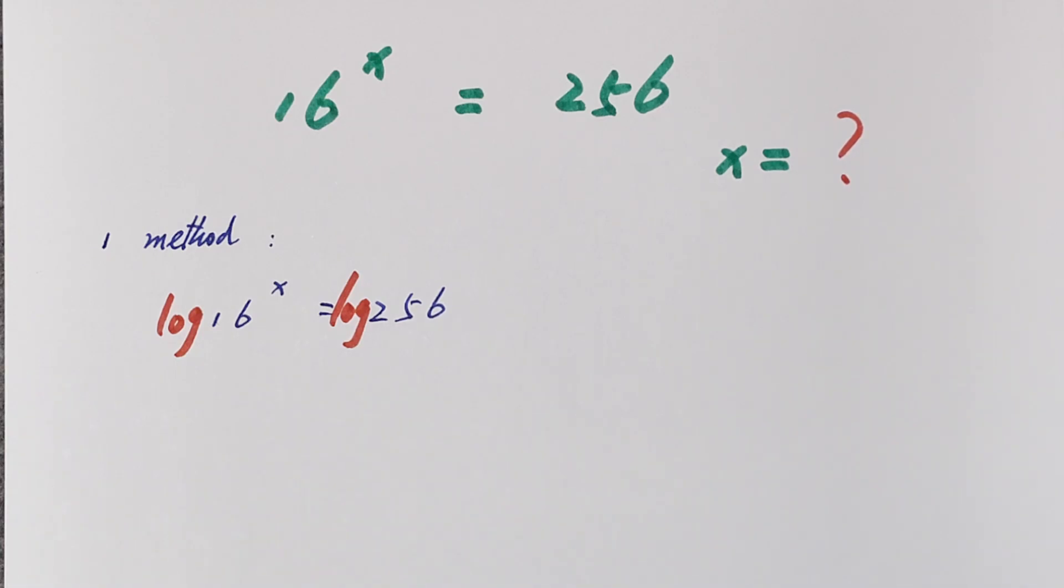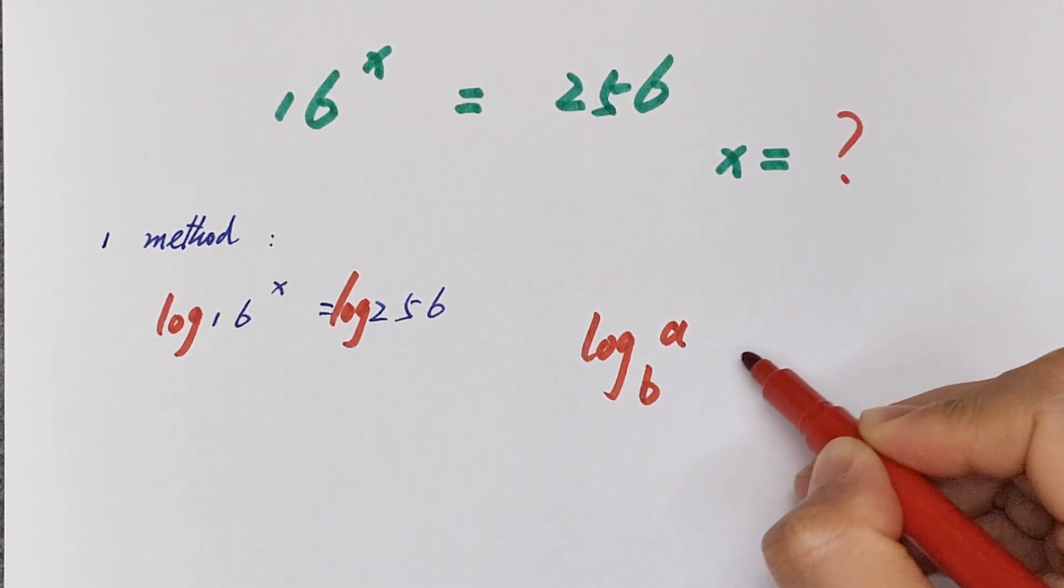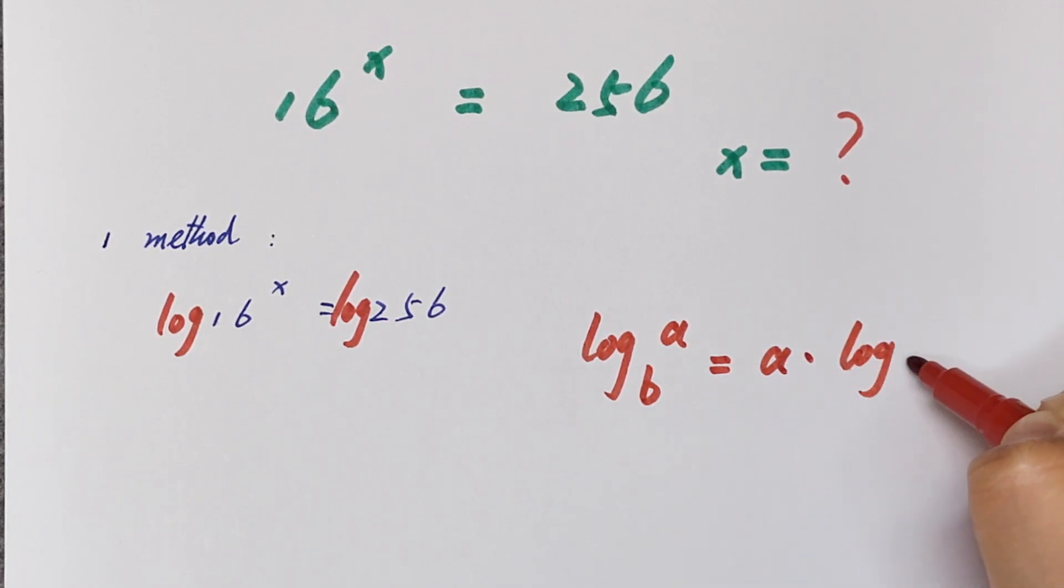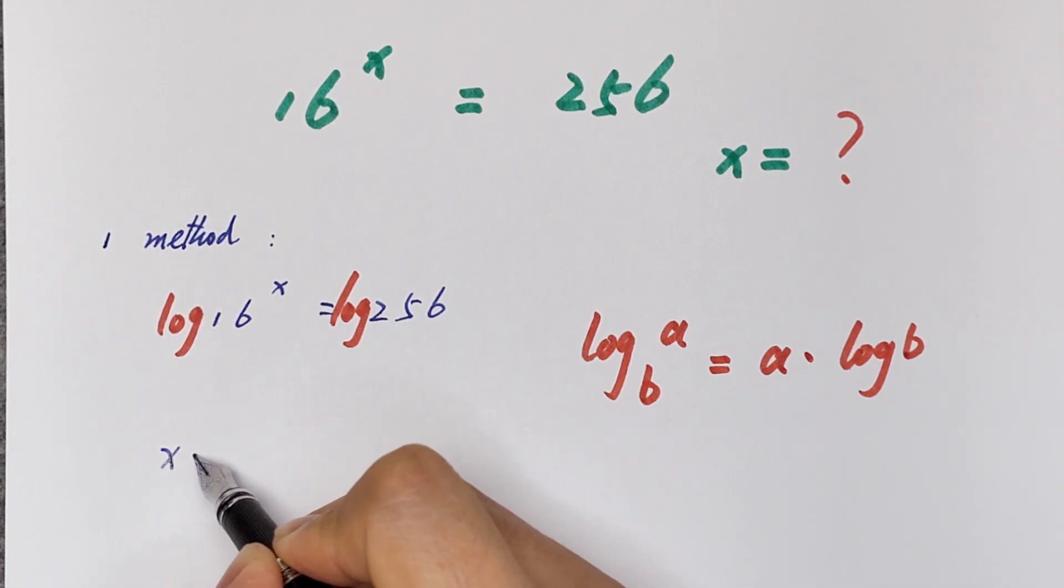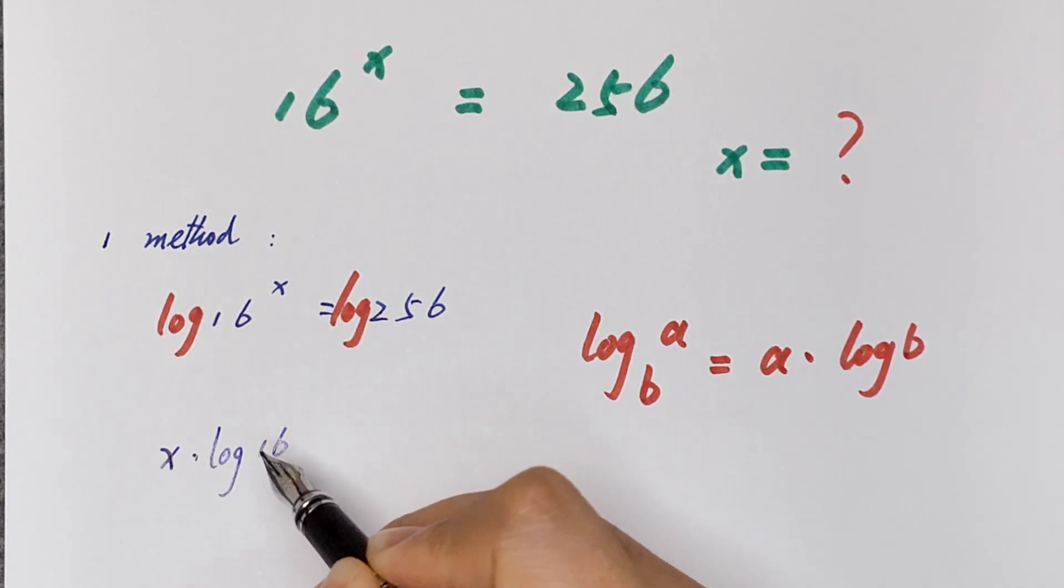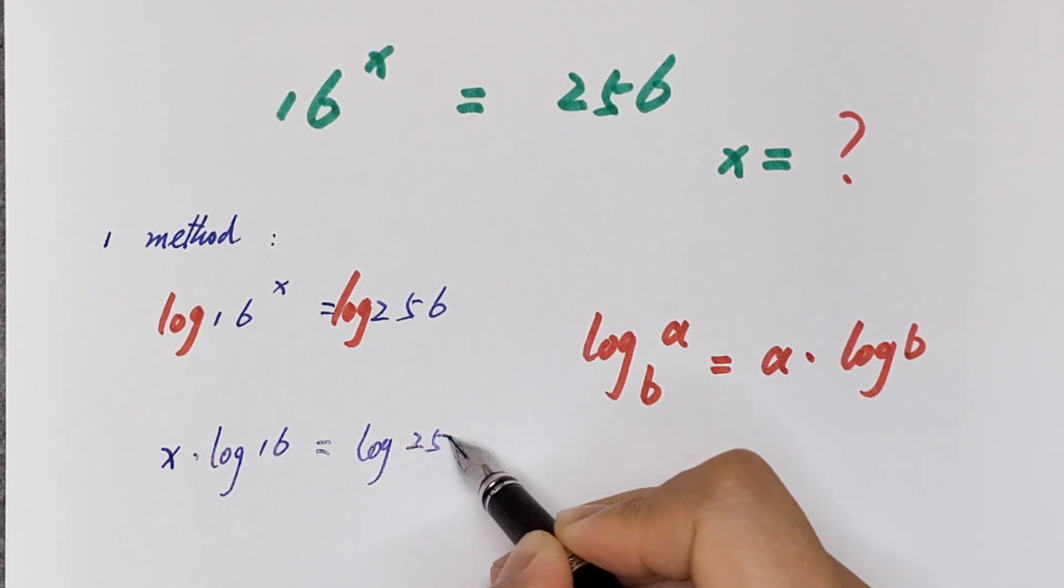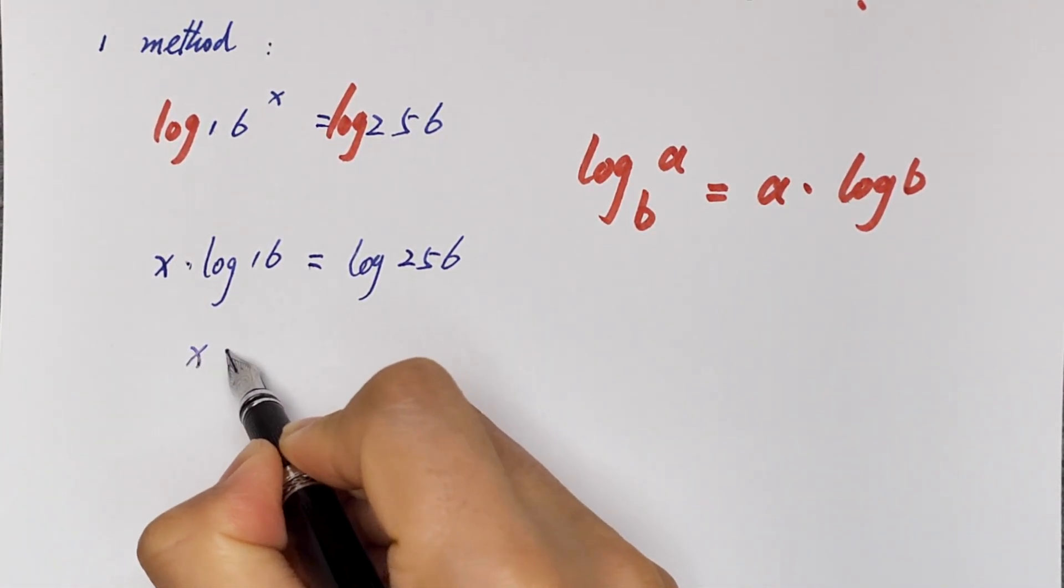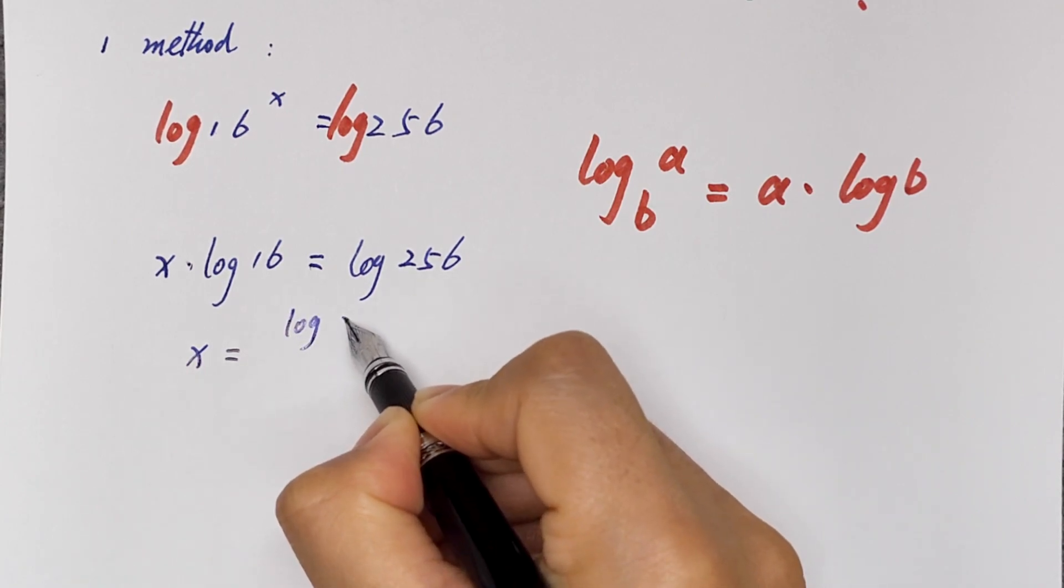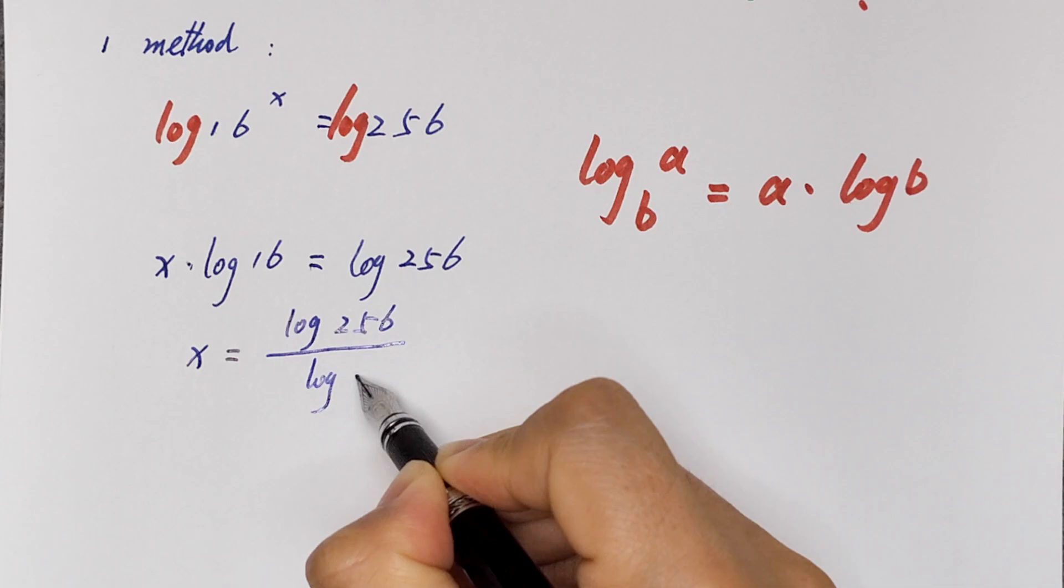We will apply the log rule that log A to the power B is equal to B times log A. Then it will be x times log 16 is equal to log 256. Then x is equal to log 256 over log 16.